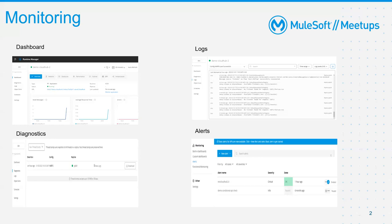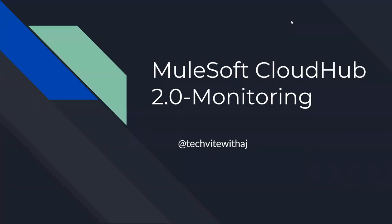Since I am using a trial version of Anypoint Platform, I cannot show everything, but we'll explore the basic monitoring offerings available to any license type including trial. I will also touch on some features that are available only with higher-tier licenses like the Titanium license.